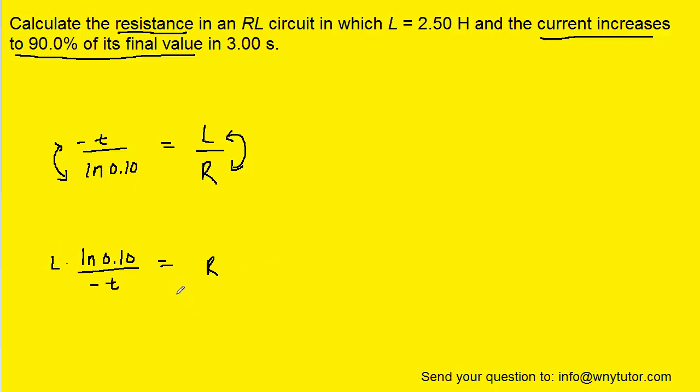And then we can plug in the known values. The inductance L is given to us in a standard unit of Henrys, and the time was given to us in the standard unit of seconds. So once we simplify that, we would get a value for the resistance of approximately 1.92. And since everything was in its standard unit, the resistance comes out in a standard unit of ohms. So this turns out to be the final answer.